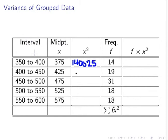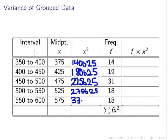Next we have 475 squared. That is 225625. Next one is 525 squared. So we get 275625. Lastly, 575. Squaring that we get 330625.